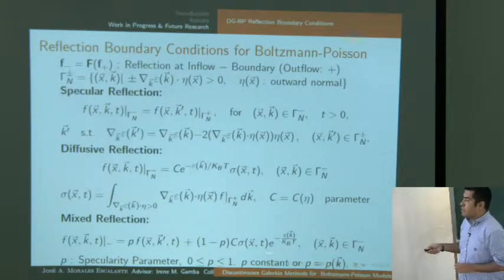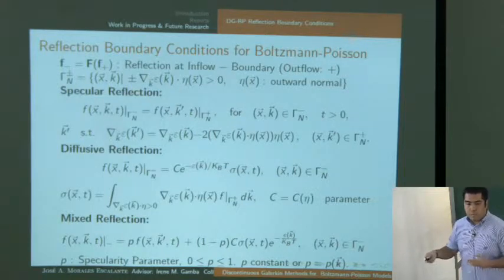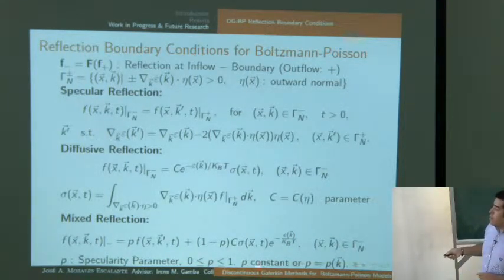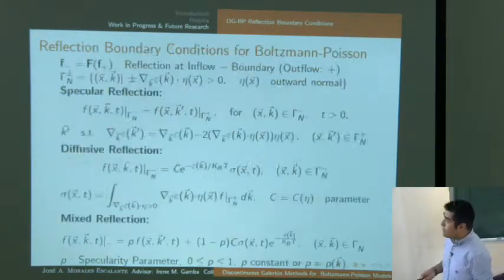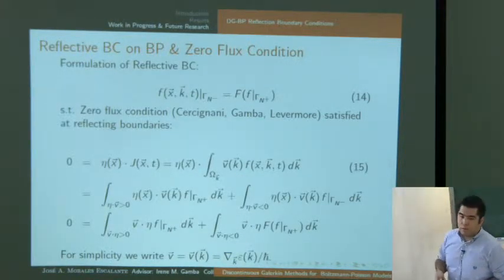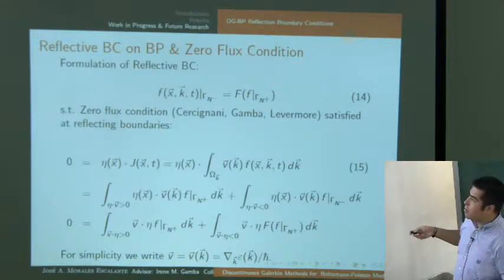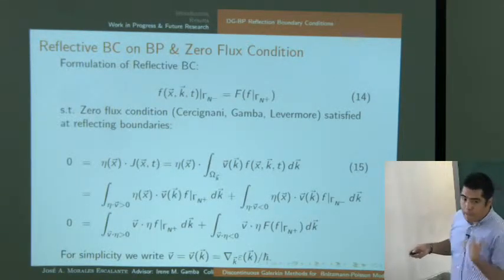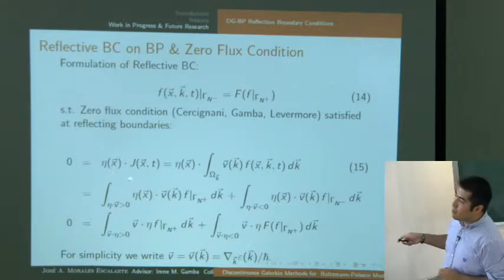The zero flux condition J · n = 0 is an impenetrability condition mentioned in Cercignani, Gamba, and Levermore for semiconductors. The current J equals the velocity times f integrated, divided between inflow and outflow parts. Plugging in the specular condition f(k) = f(k') gives zero — the zero flux condition is automatically satisfied. For diffusive reflection, the constant C is derived from the zero flux condition, giving the well-known result. For the constant-p mixed case, by convexity the zero flux condition is also satisfied.